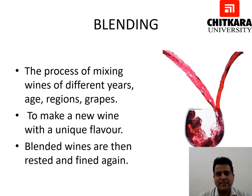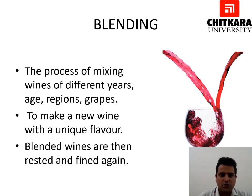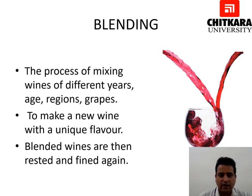The second-last step in the production of white wine is blending — the process of mixing wines of different years, ages, regions, and grapes. Blended wines are then rested and filled again so as to achieve a clear wine.